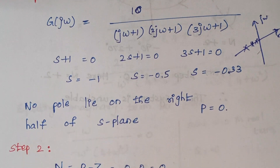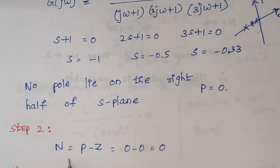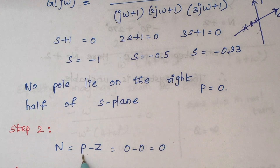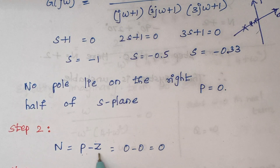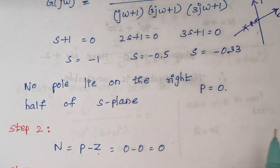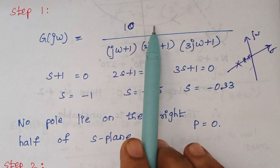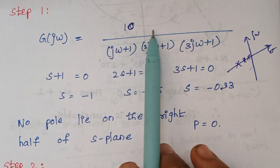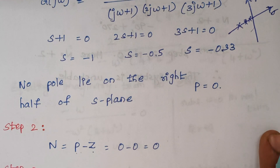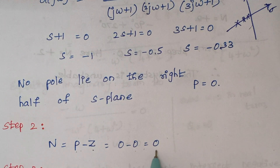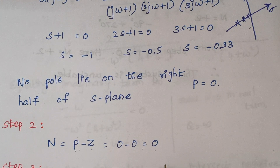Step number 2 is finding the encirclements. It is given by the formula P minus Z, where P is the number of poles lying on the right half of the S plane and Z is the number of zeros lying on the right half of the S plane. When you look at the problem, there are no zeros — only a constant 10. So the value of Z is 0, and 0 minus 0 is 0. This means that the point -1+0j should not be encircled.